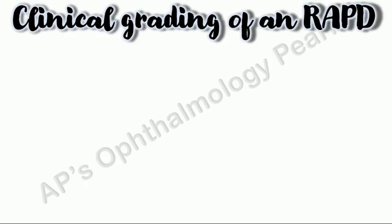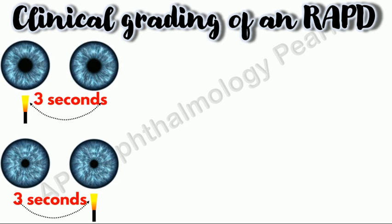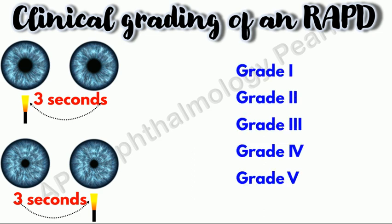The clinical grading was described by Bell and is relevant only when the light is shone on each eye for exactly 3 seconds before swinging to the other eye. Bell described 5 grades of RAPD.